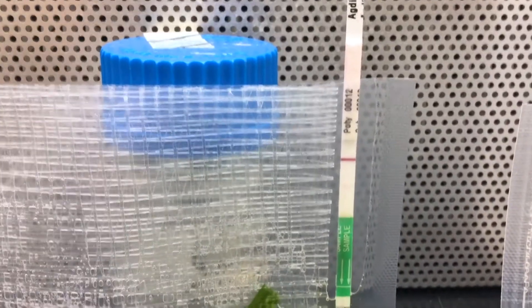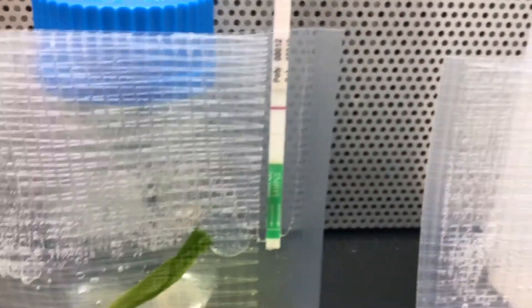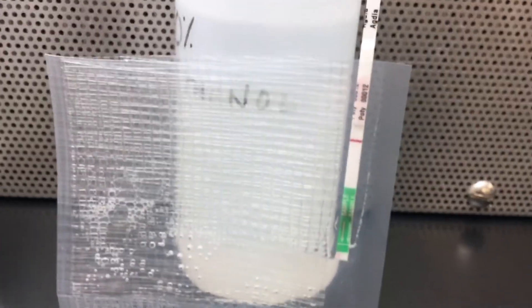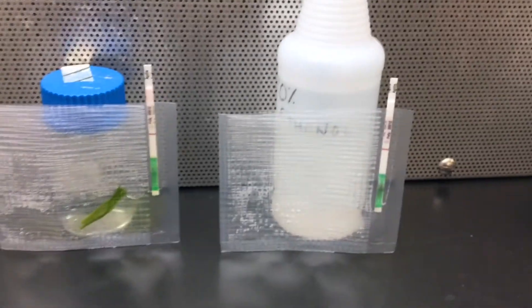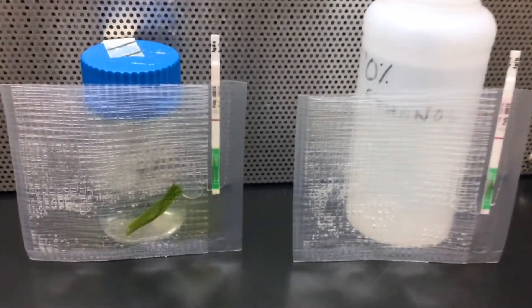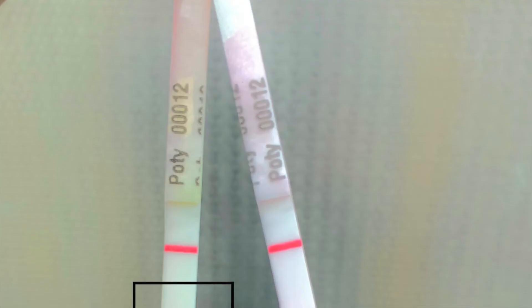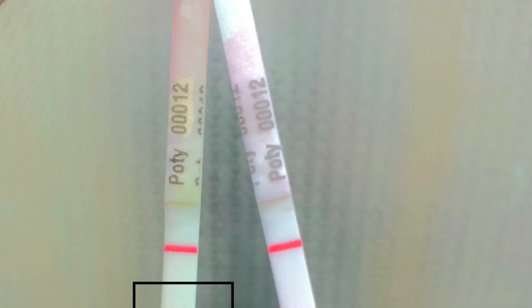After 30 minutes, you can see the upper line or control line clearly, even in the buffer-only test. But you are going to do only the test with the plant sample. I did this to compare between positive and negative results. If we see both the upper control line and the lower test line clearly, that means your sample is positive for the virus.